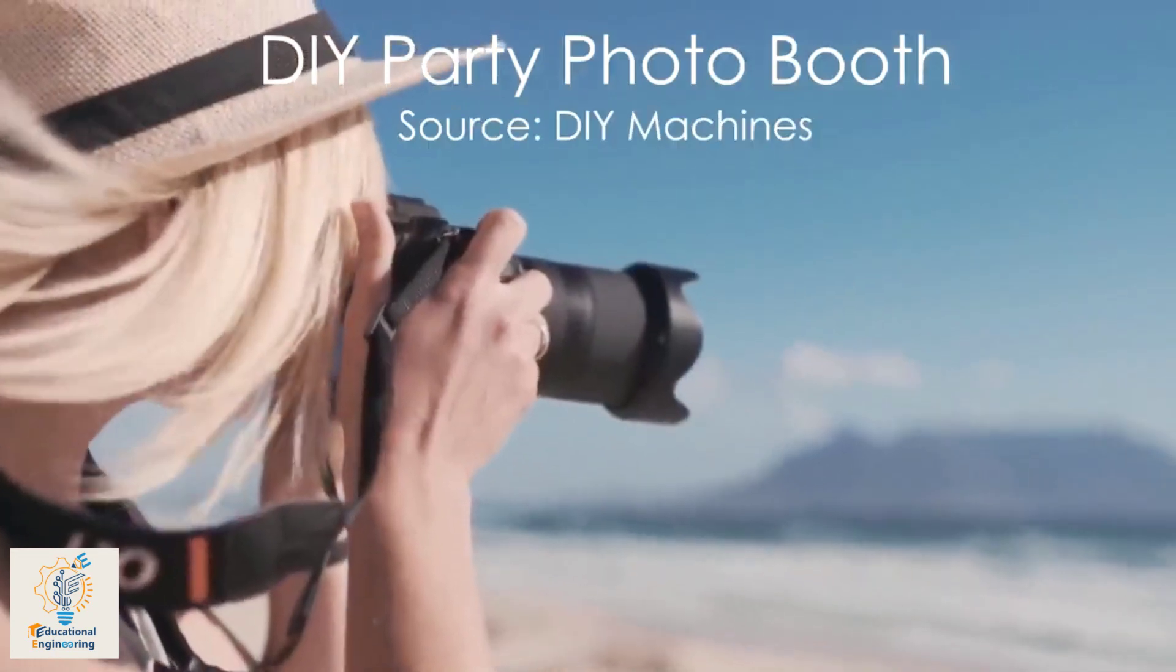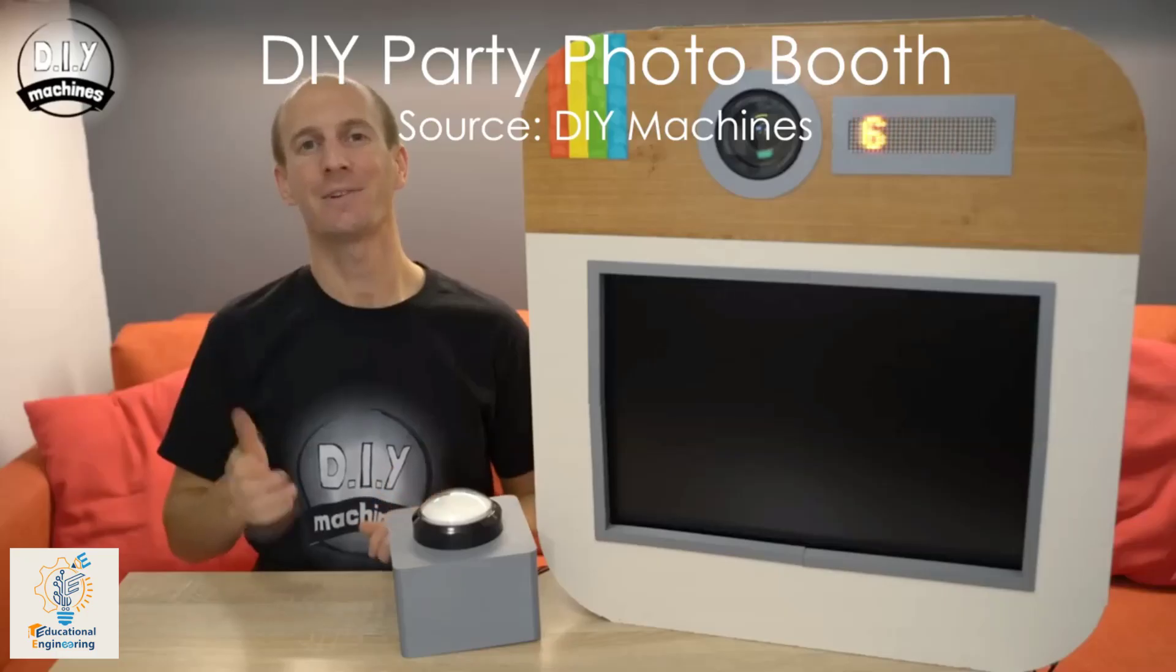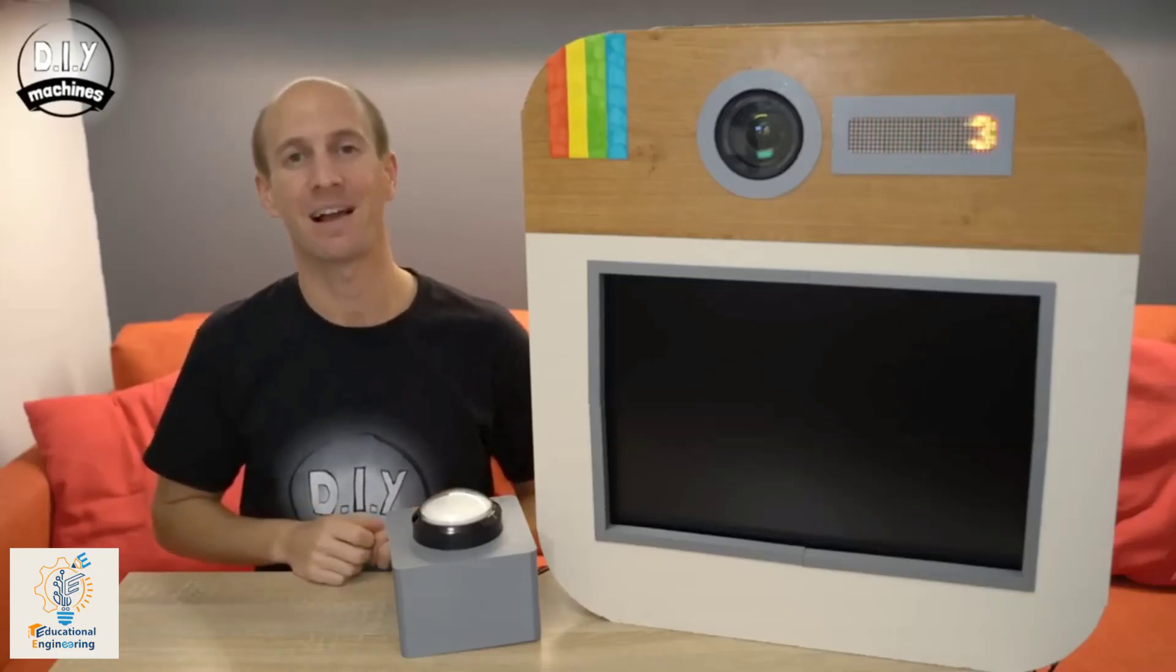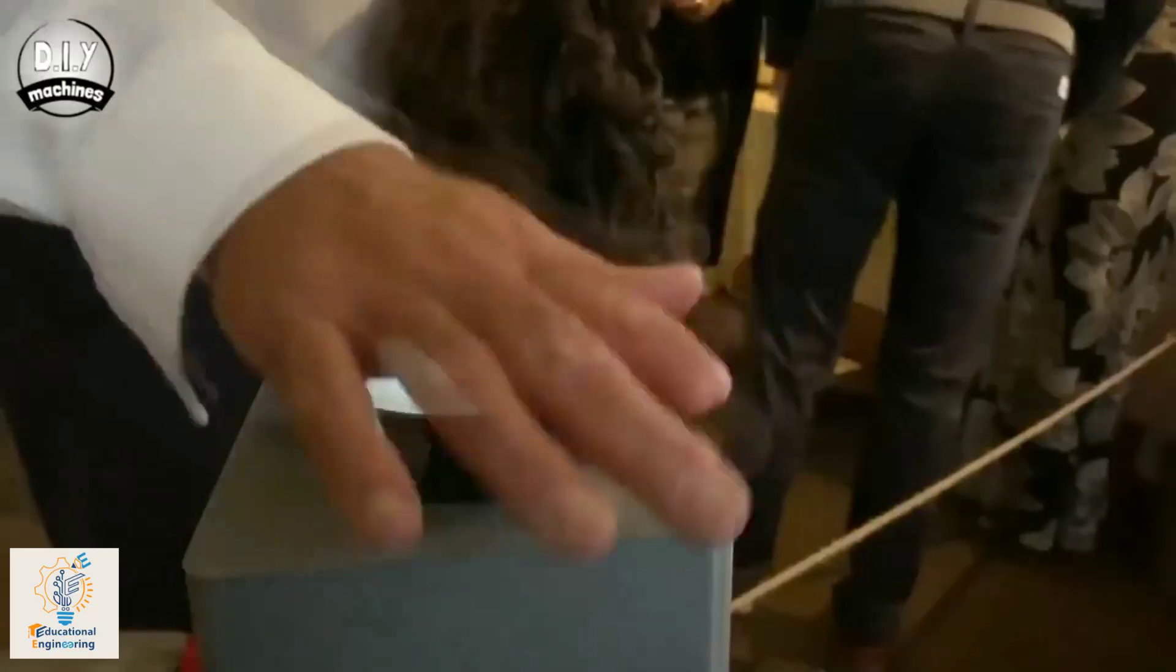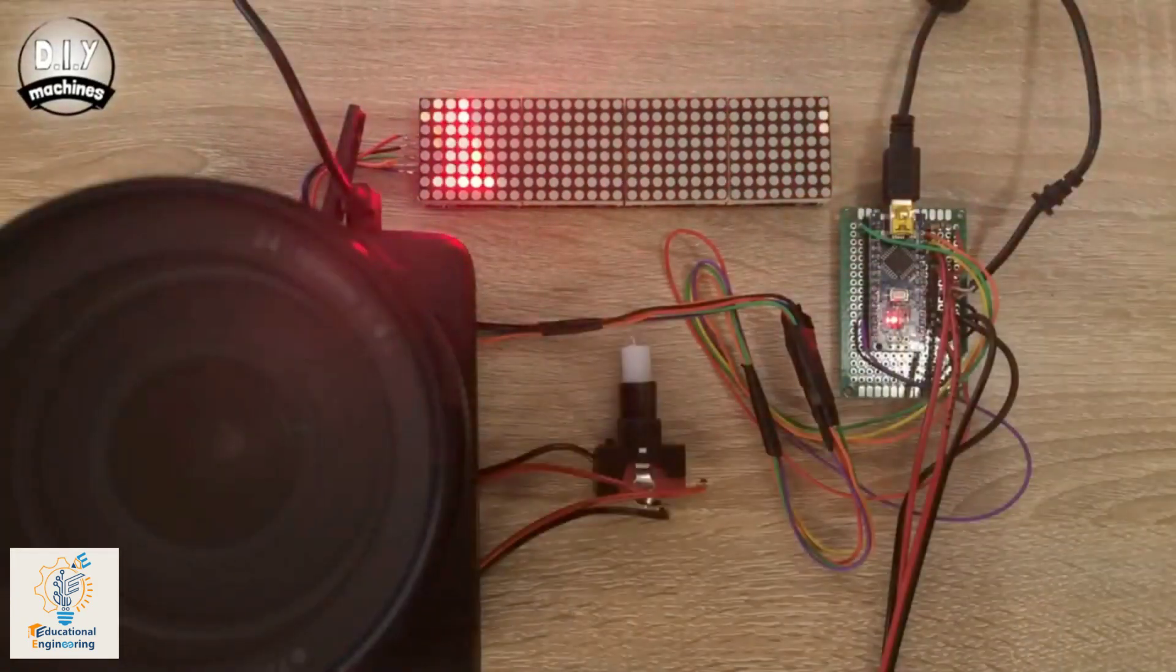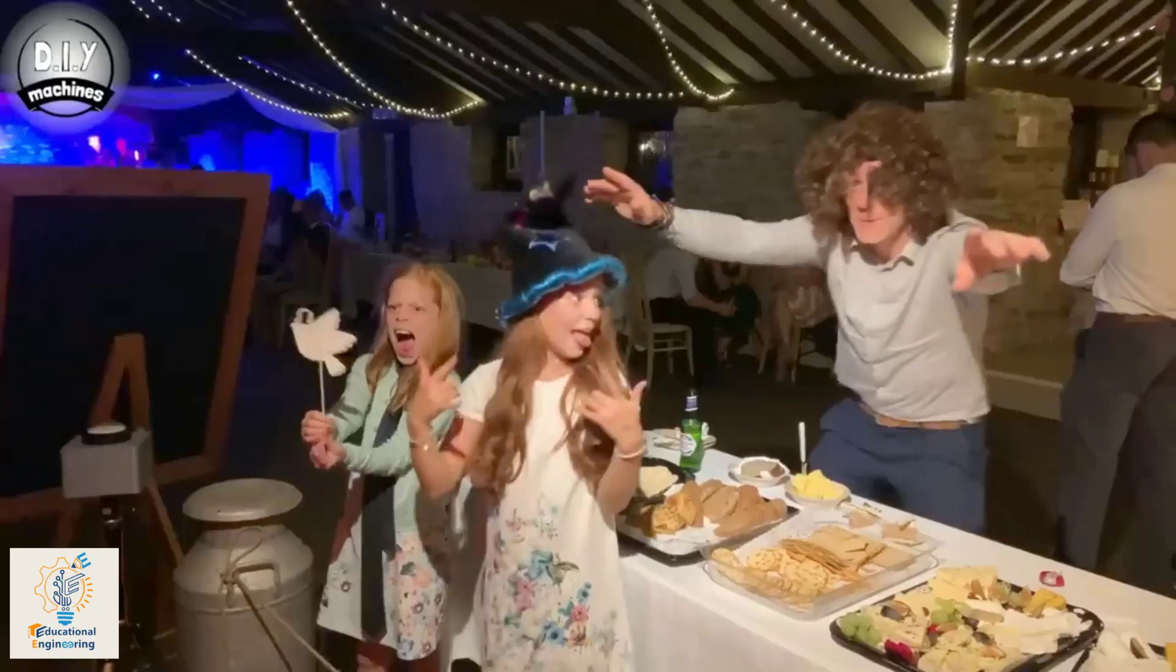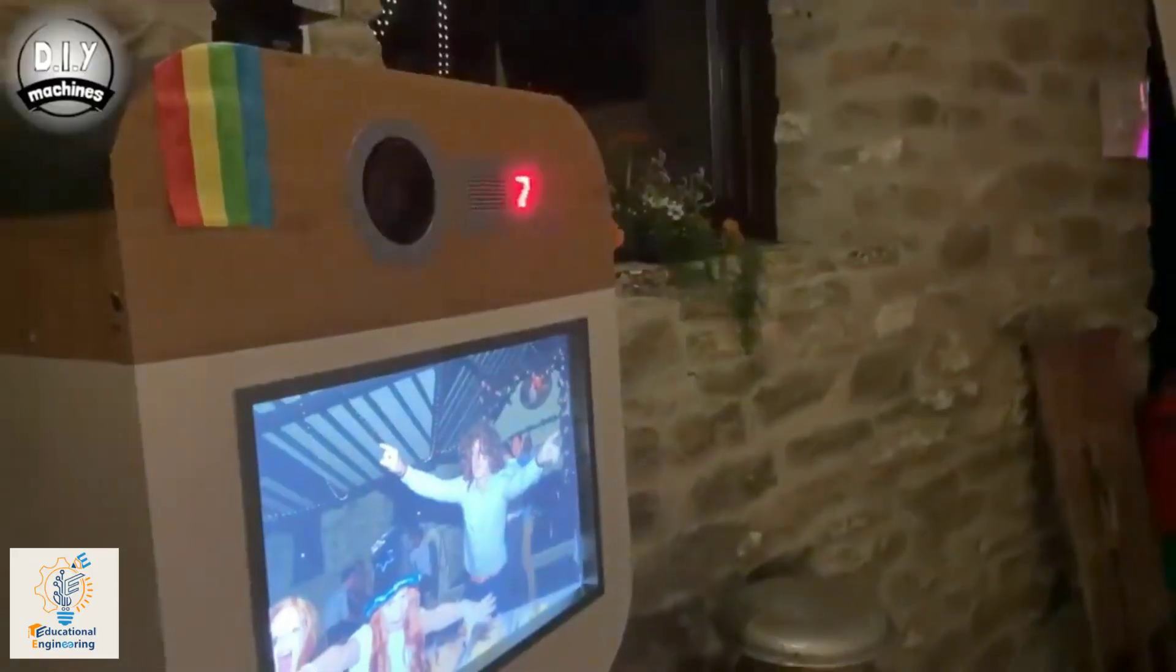Instead of letting someone else take a picture of your group, you can include this DIY photo booth in your next party. All you need is to stand in front of the screen and press this giant button. Upon pressing, it starts a countdown, and once complete, it displays the captured photograph on the monitor.